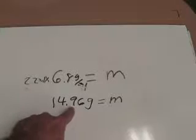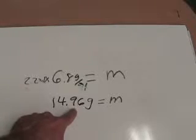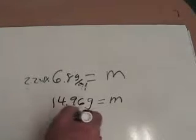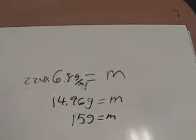So 14.9, since the third digit is a 9, when I round it, I have to round up, since this is more than 5, so I'm going to round it to 15 grams. 15 grams equals the mass in this case.